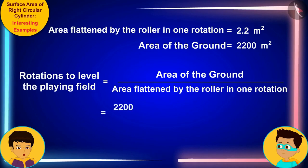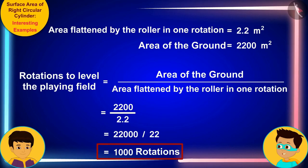Look Thomas, in one rotation the roller flattens an area of 2.2 square meters. So in order to find the number of rotations the roller takes to level the entire ground, that is 2200 square meters, we only need to divide the area of the field, 2200 square meters, by the area of the field being flattened in one rotation, 2.2 square meters.